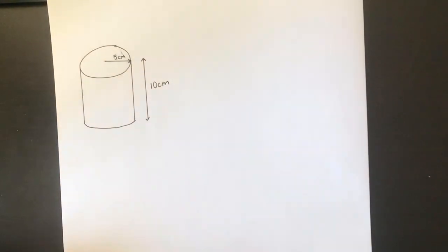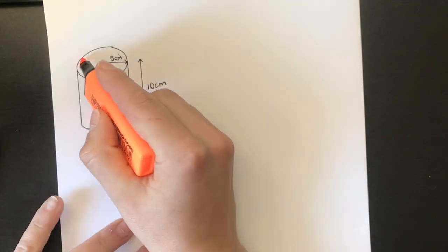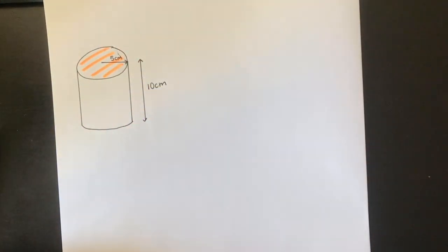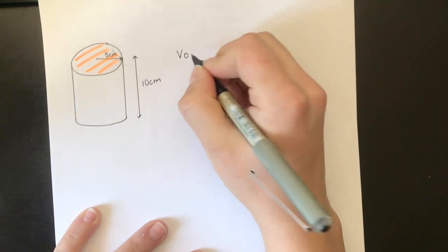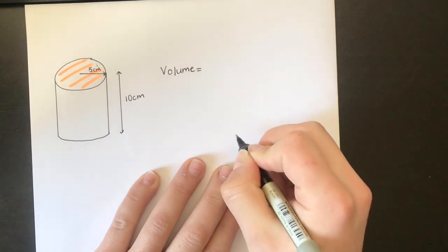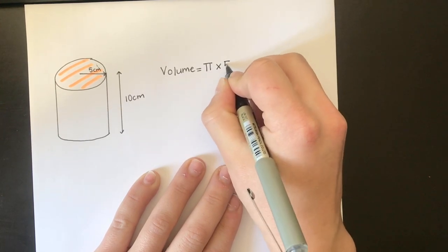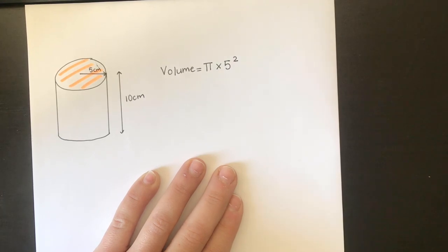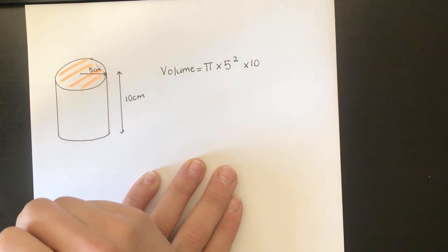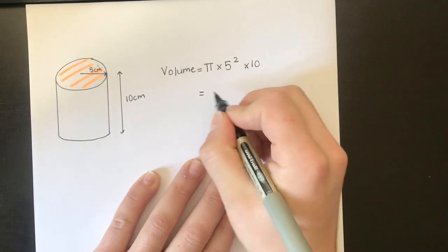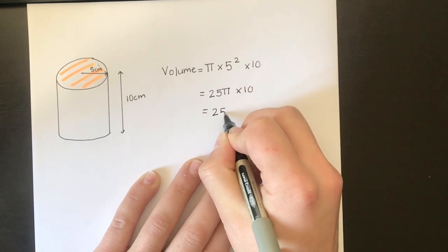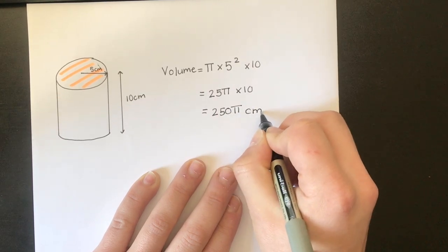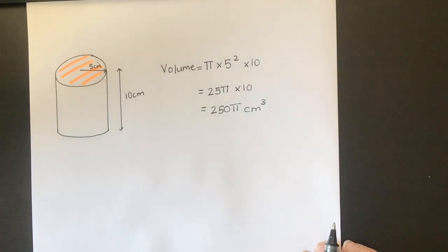Over here I've got a cylinder. The face of a cylinder is a circle. So I'm going to find the area of the circle and times it by the length. The volume is going to be pi times by the radius squared — the area of the face — times by the length. I don't have my calculator, so I'll leave my answer in terms of pi. I've got 5 squared, which is 25, times pi times 10, giving 250 pi centimeters cubed. So those are three examples of how to find the volume of a prism — it's the area of one face times the length.